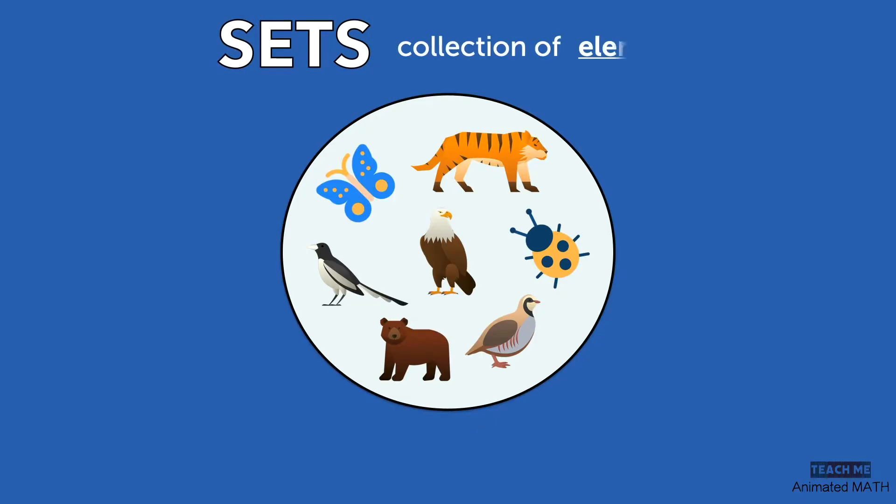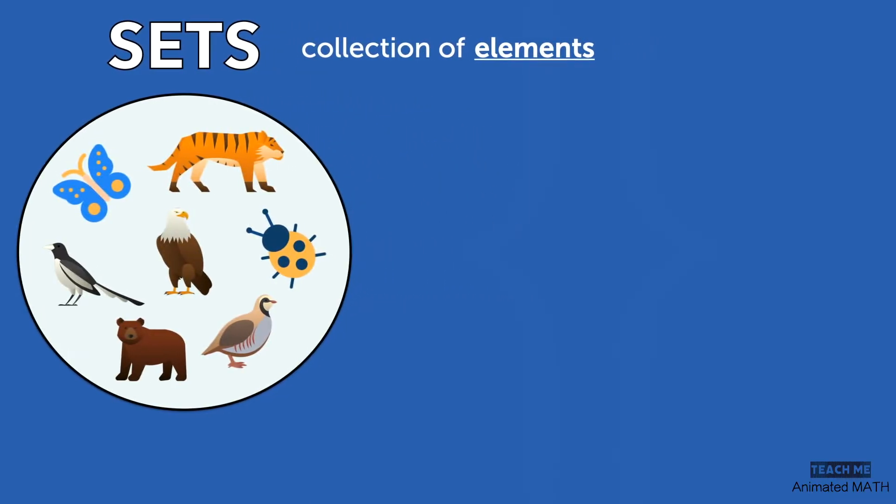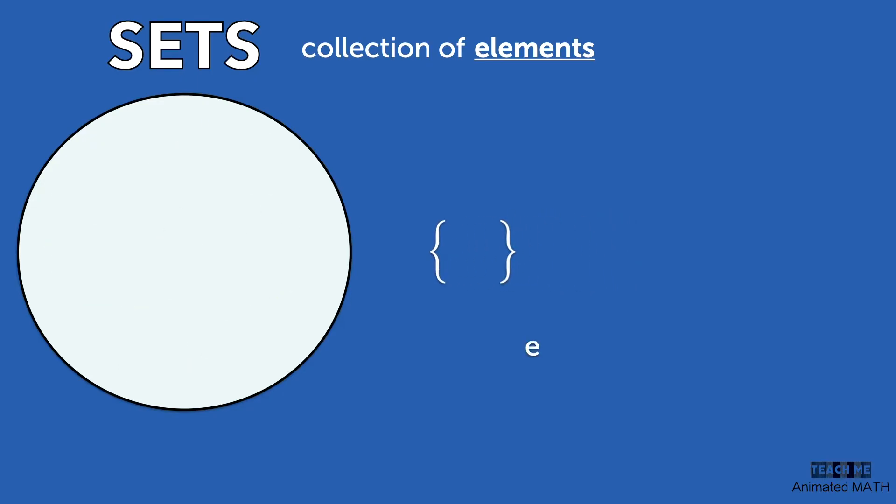Sets are a group of items called elements. To show a set, we place the elements in between curly braces like these. A set without any elements is called an empty set or a null set, shown by just the curly braces or this symbol here.